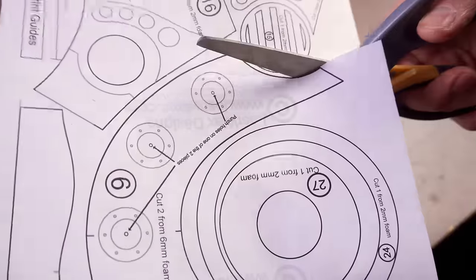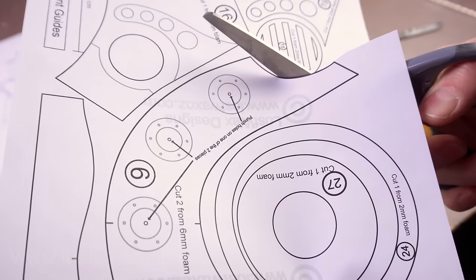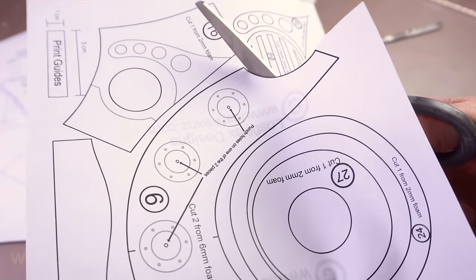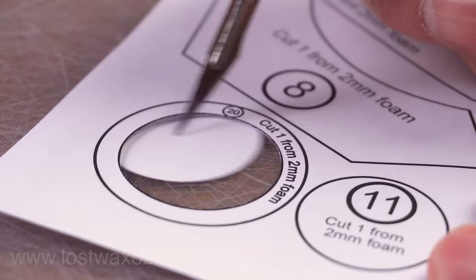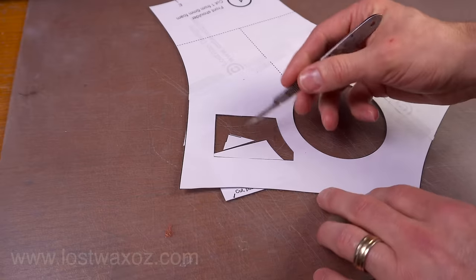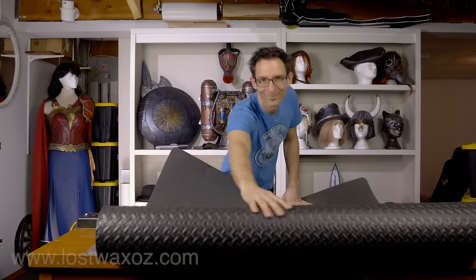Now grab some scissors and start cutting out those pattern pieces. Cutting as close to the black line as possible without removing it. I find it a lot easier to cut out the inside parts of pieces with a knife rather than scissors. You should end up with a nice stack of pieces.